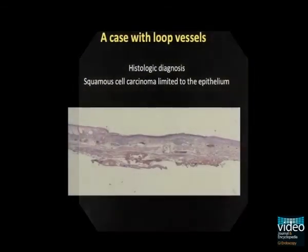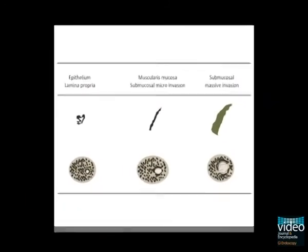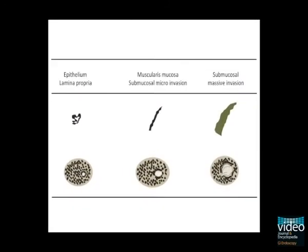When we observe the lesion at maximum magnification, we can see dilatation, tortuosity, and various shapes of the vessels, with brownish colour changes in the areas between the vessels. The histologic diagnosis of the resected specimen was a cancer limited to the epithelium.